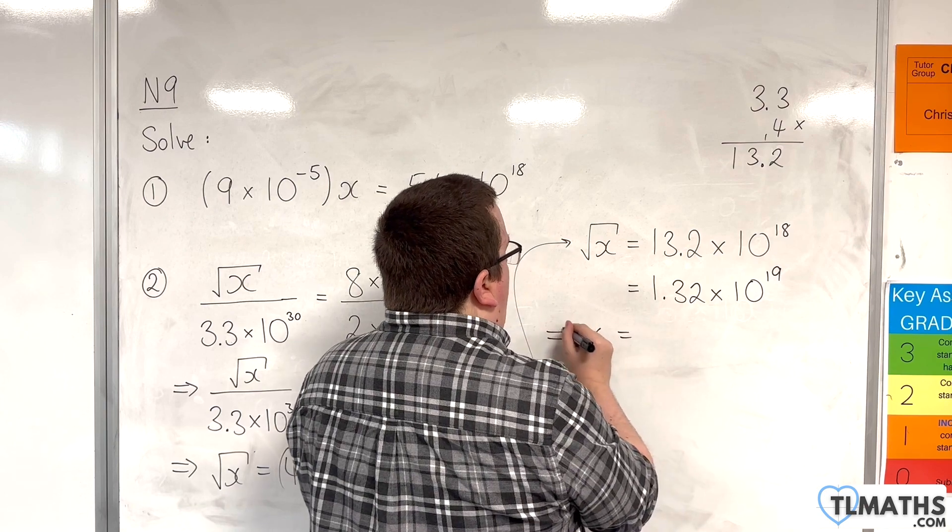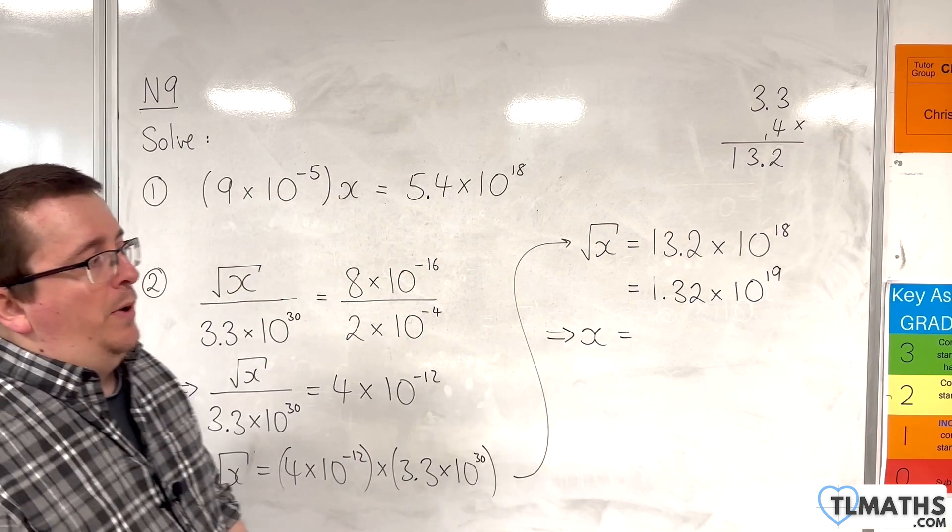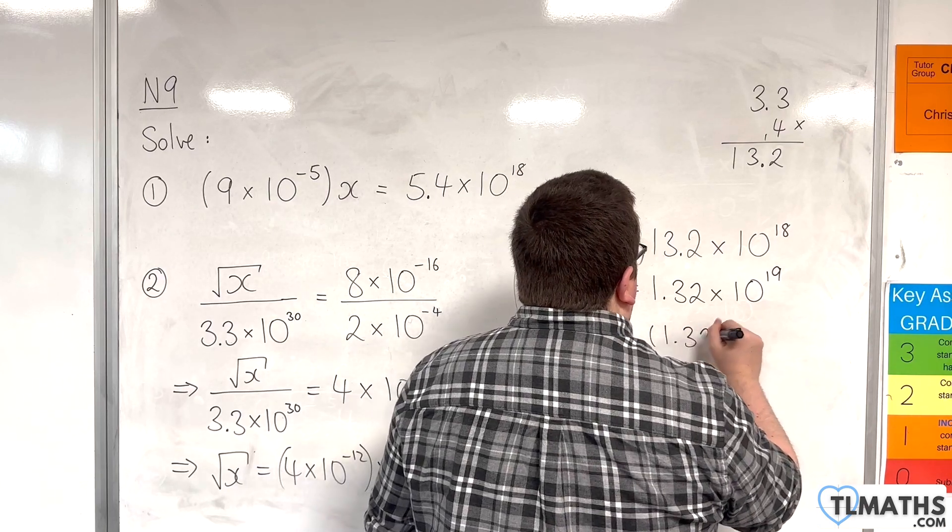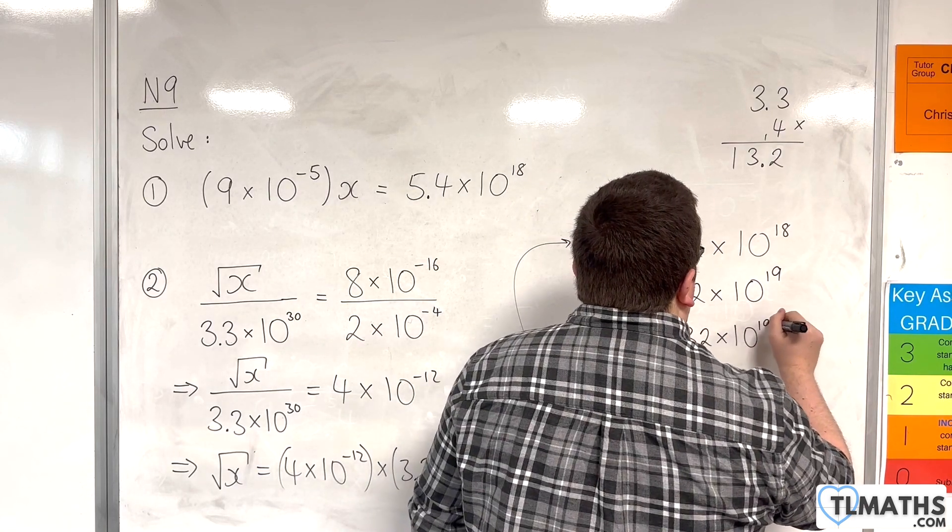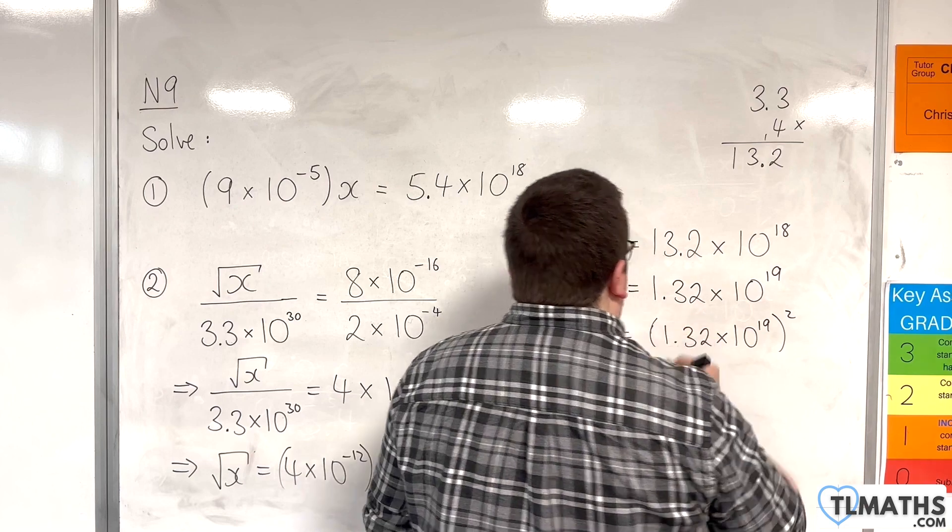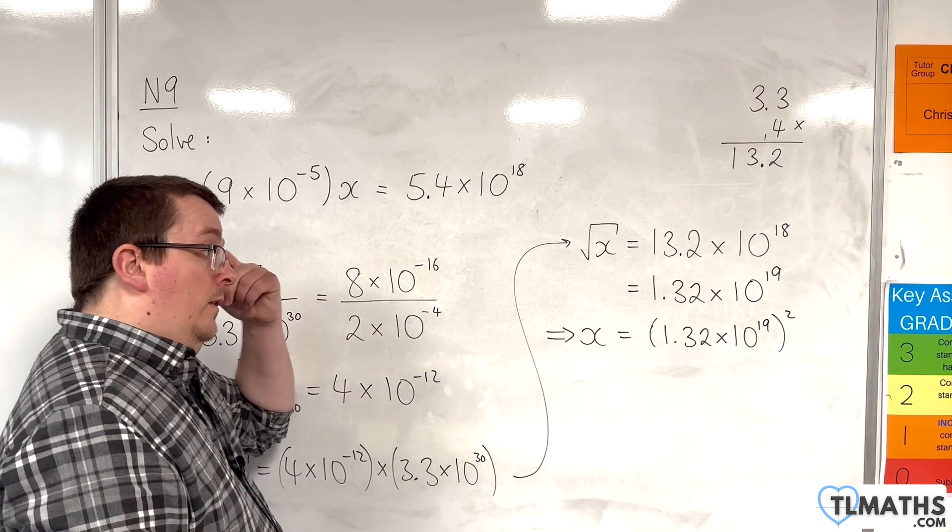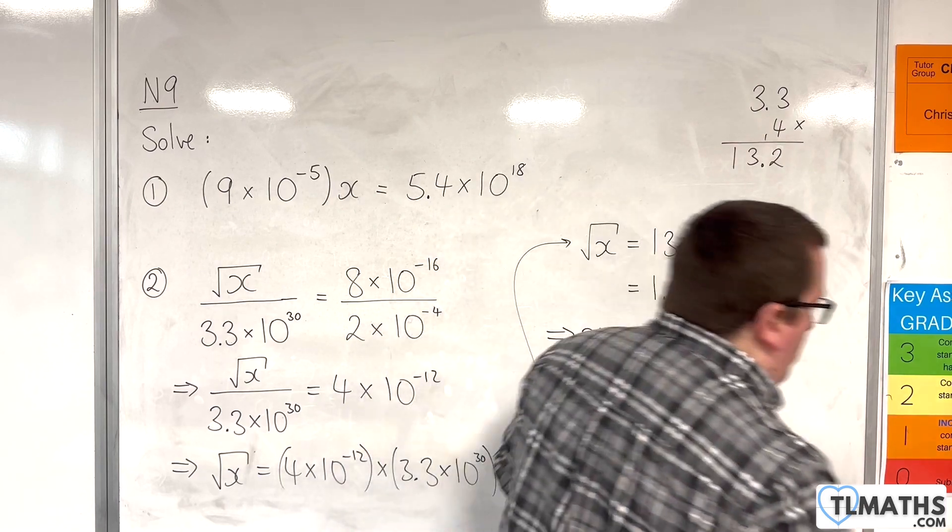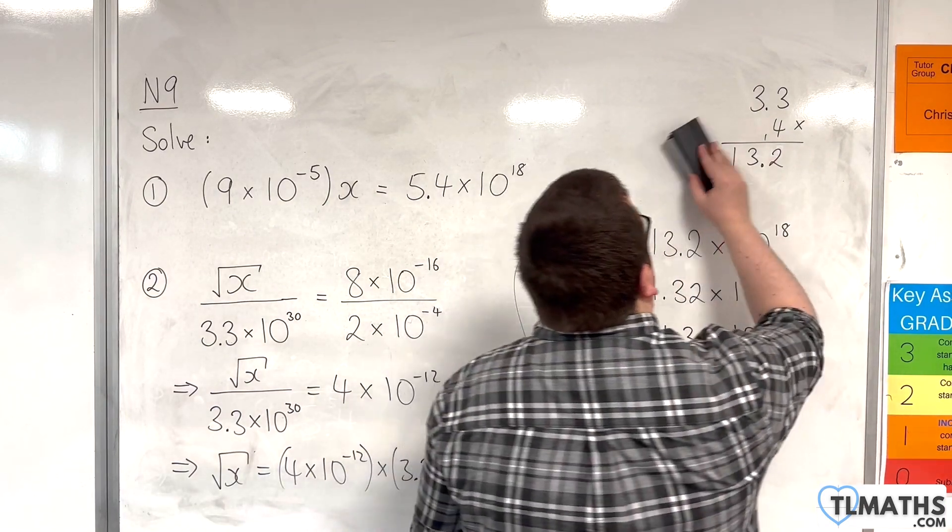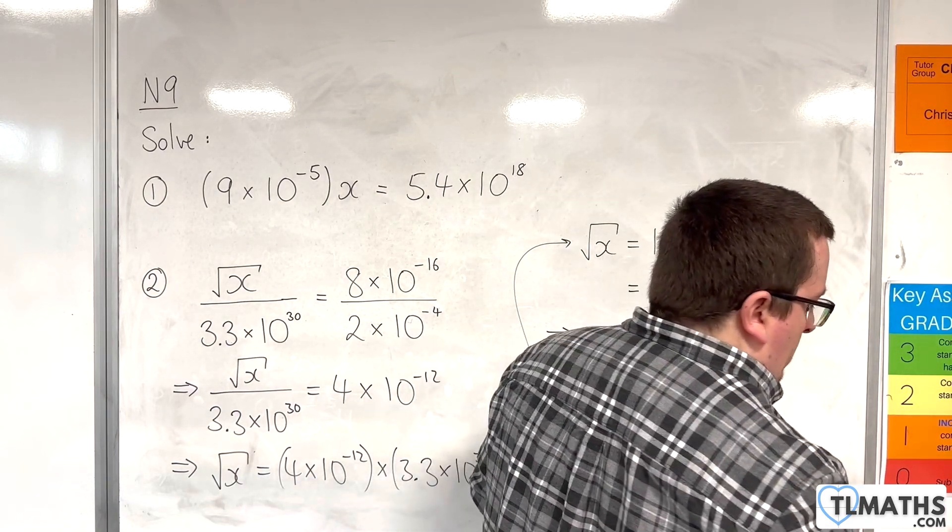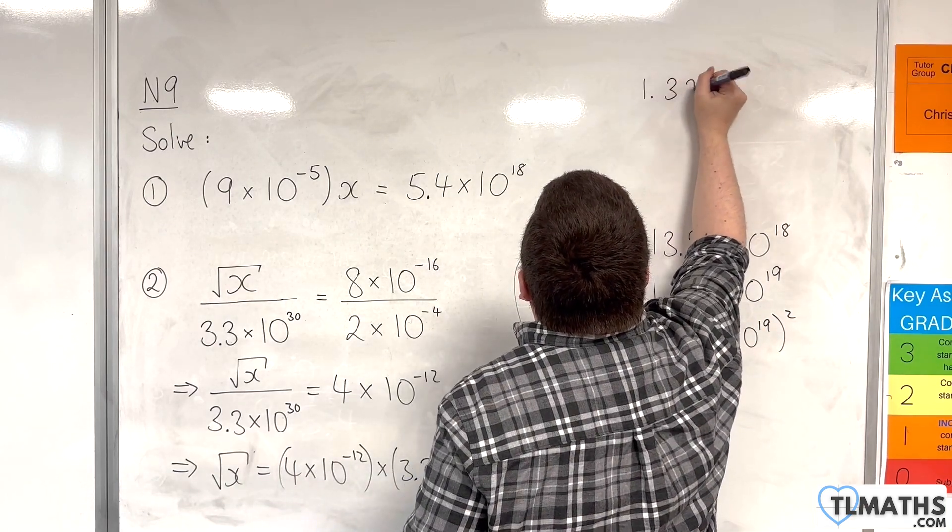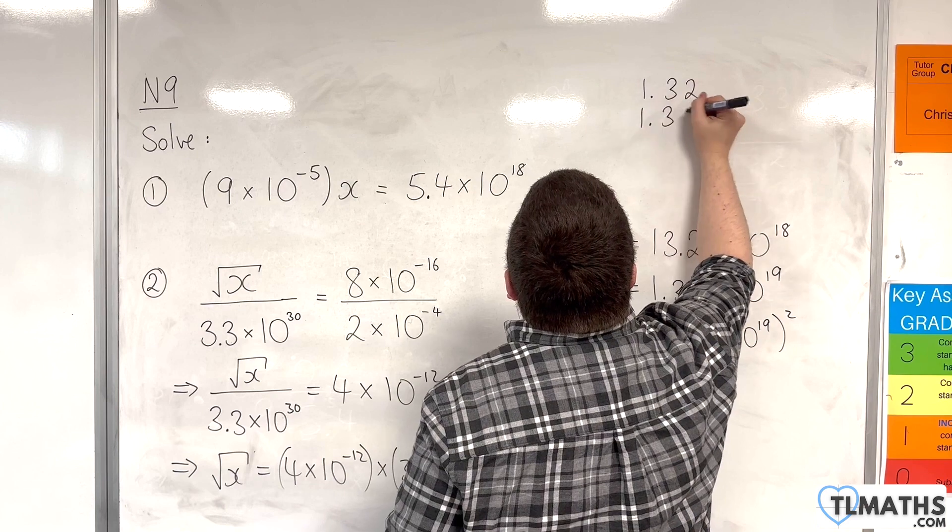Now, in order to get the x, I need to square both sides. So, 1.32 times 10 to the 19 squared. Okay, so that means I need to work out what 1.32 times 1.32 is. Okay, so 1.32 times 1.32.